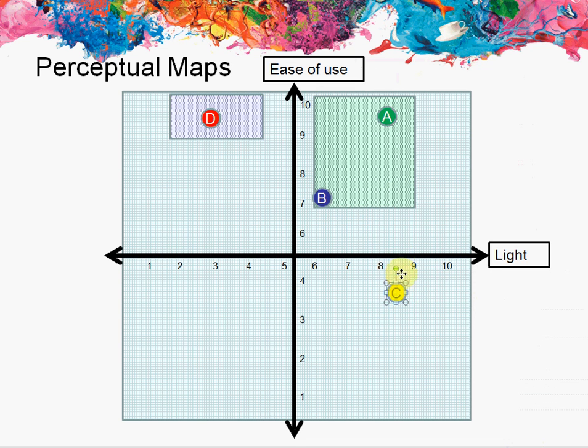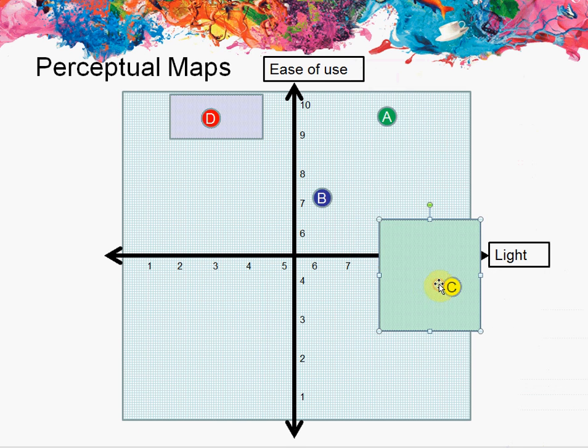So as our product gets easier to use, maybe we just need to educate the customer on how to use it. So as they learn how to use it and it gets easier and easier to use, it sort of goes up into the right sort of area and lands in this green quadrant up here where it fits within customers' expectations. And it's certainly much easier to change our product than it is to change customers' expectations and move them over here.